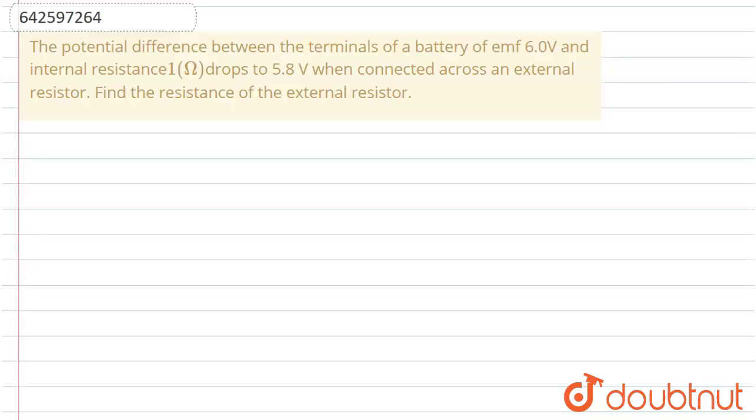In this problem we have given that the potential difference between the terminals of a battery of emf 6 volt and internal resistance 1 ohm drops to 5.8 volt when connected across an external resistor. We have to find the resistance of the external resistor.